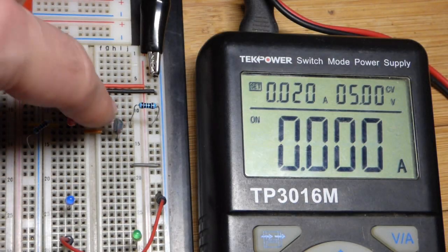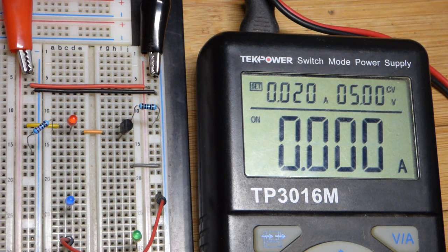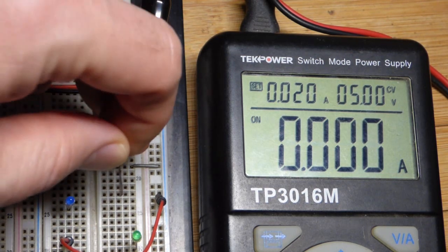So now in this video, I'm going to make a current source. We're going to get about 10 milliamps of current regardless of the load here.